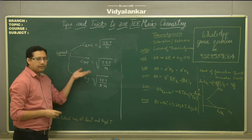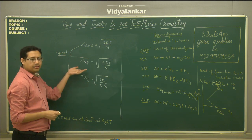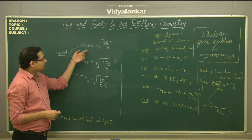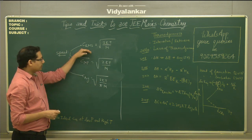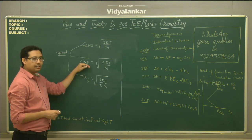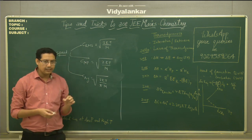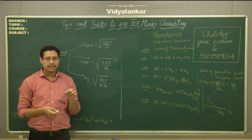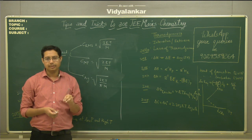The RMS speed is the highest among the three speeds, followed by average speed and then most probable speed. Sometimes questions involve finding their ratios. Real gases can behave like ideal gases at low pressure and high temperature.